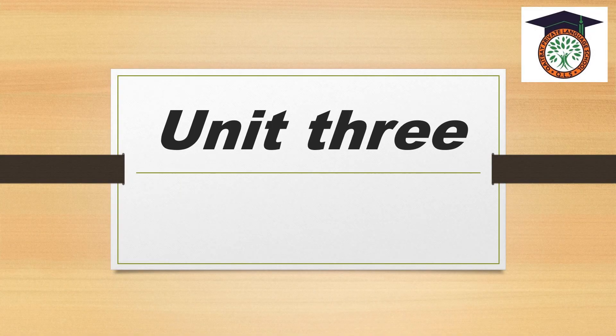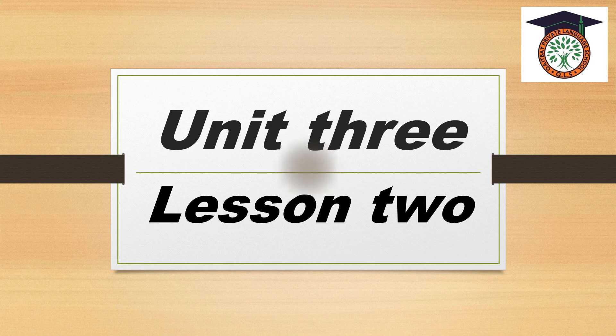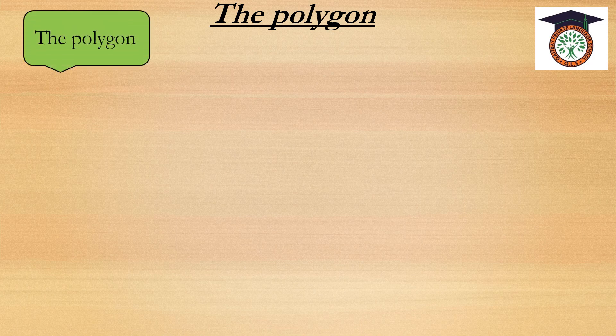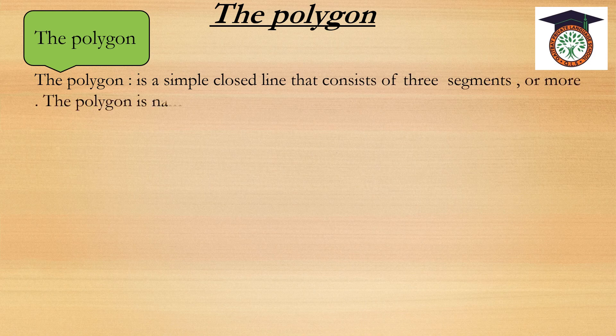Today we are going to study unit 3, lesson 2: The Polygon. The polygon is a simple closed line that consists of 3 segments or more. The polygon is named according to the number of its sides.